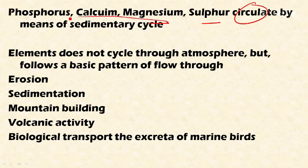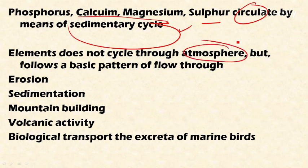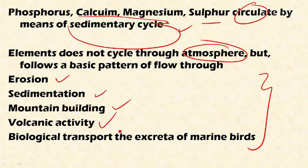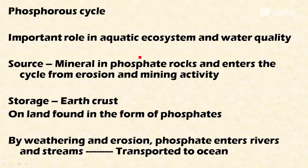The elements like phosphorus, calcium, magnesium, and sulfur circulate by means of the sedimentary cycle. These elements do not cycle through the atmosphere — this is important. Instead, they follow a basic pattern of flow through various means like weathering, erosion, sedimentation, mountain building, volcanic activity, and biological transport including excretions of marine birds.